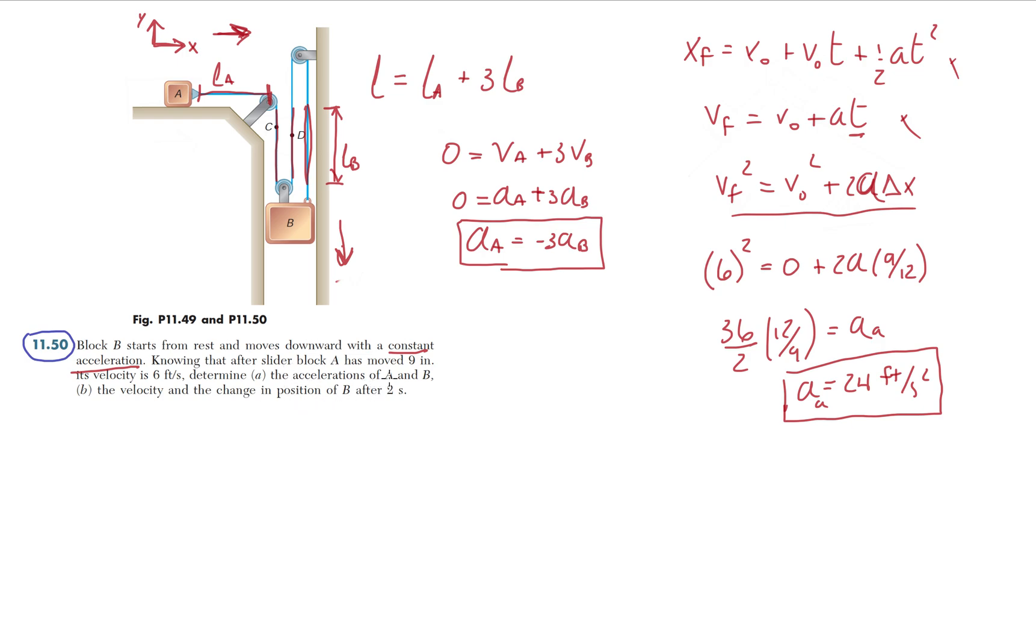So the accelerations of A and B. And then to finish part A, we plug that in there and we get 24 divided by negative three gives us acceleration of B, minus eight feet per second squared. Part A is done. Remember, this is pretty much the crux of the problem, just getting this part done. And then we're pretty much home free after that.